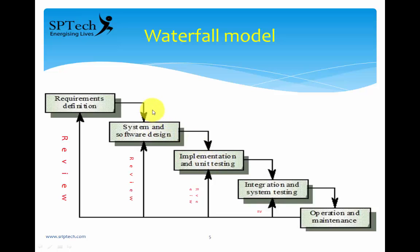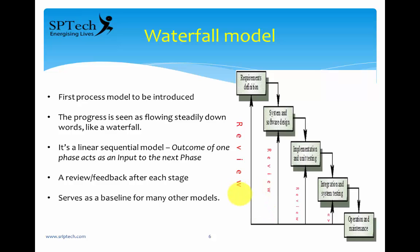You can see the waterfall falls from top to bottom — similarly, the waterfall model flows from requirements definition down to operation and maintenance. After each stage there is a review mechanism, meaning feedback is given to the previous stage, checking if there are any problems. You have to go back, address those problems, and then come back to the next stage. The waterfall model also serves as a baseline for any other models, because after its development, many other models were created in the software industry.